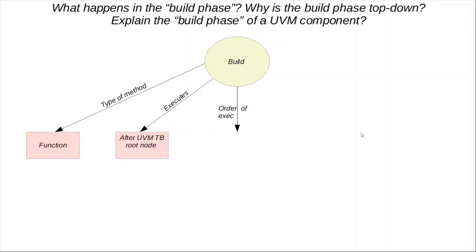So what's the order of execution? The order of execution for a build phase is top down. It extends from the UVM top down phase class. The only other phase that is top down is the final phase — of course, the last phase.